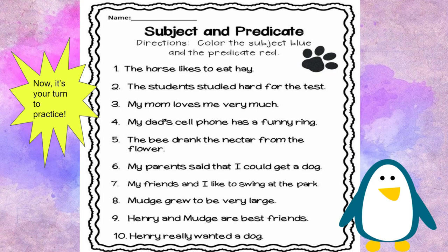My parents said that I could get a dog. My friends and I like to swing at the park. Mudge grew to be very large. Henry and Mudge are best friends. Henry really wanted a dog. Please pause the video and, using a red and blue pen, write down the subject of each sentence and the predicate of each sentence. In a little bit, we will go over our answers.